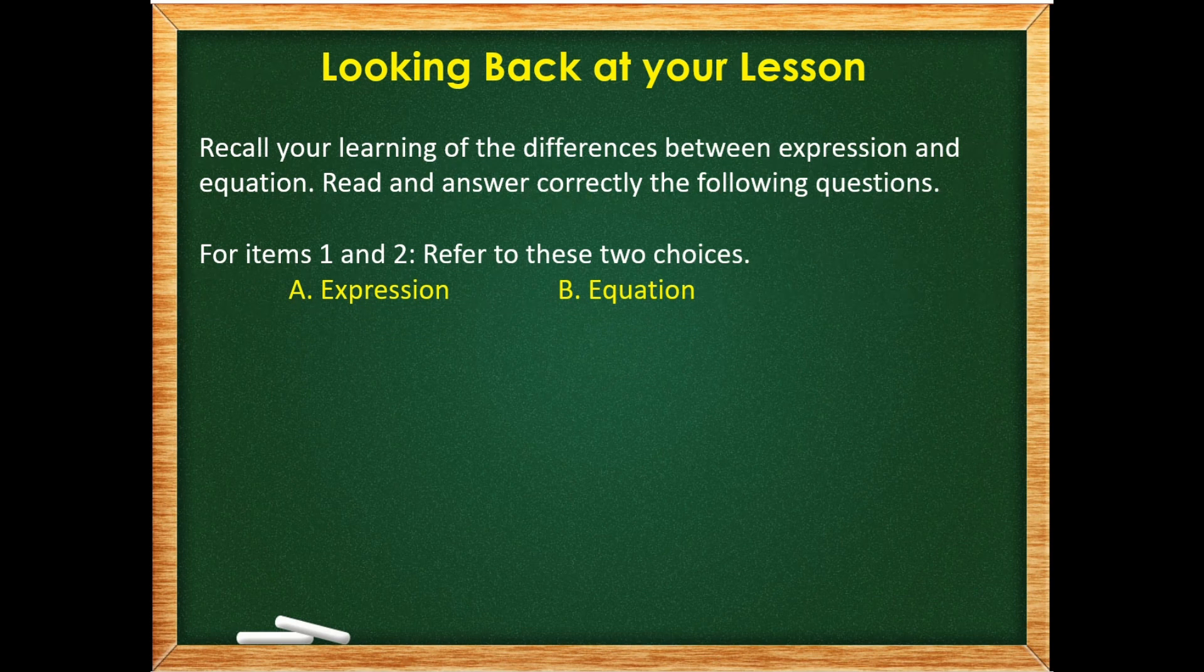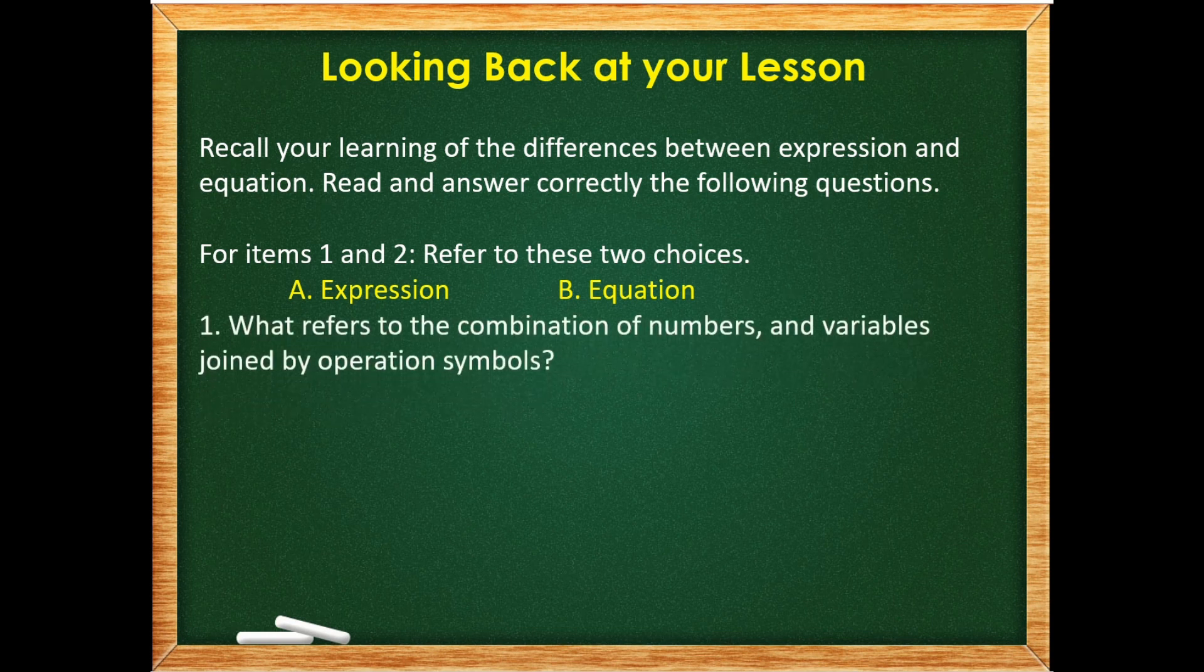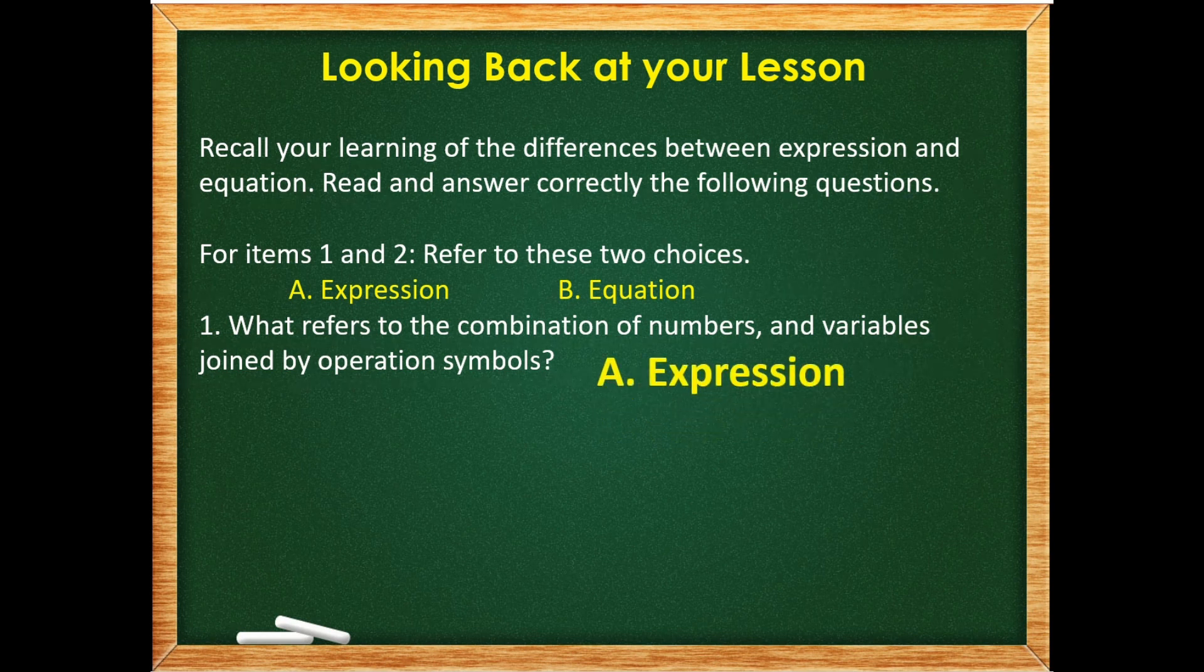Read and answer correctly the following questions. For items 1 and 2, refer to the equation. Let's look at these two choices: A. Expression, B. Equation. Question number 1. What refers to the combination of numbers and variables joined by operation symbols? Yes, the correct answer is letter A. Expression.